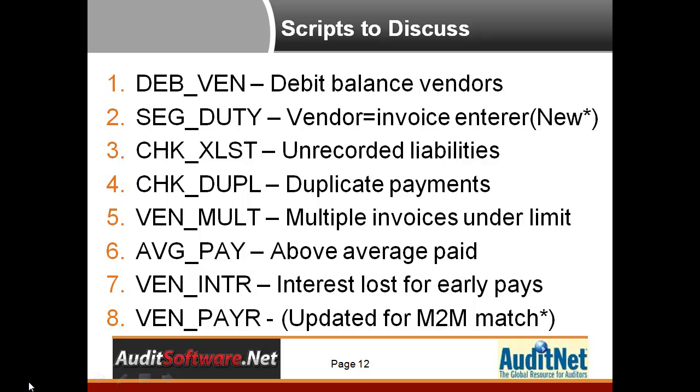Segregation of duty testing — I added this one; it's not in the original work from ten years ago. It looks for where the vendor create user equals the invoice create user, meaning the same person created both. That's a major segregation of duty issue, and we're going to look at that from both a join perspective — joining the files — and then an extract statement. The check XLST script looks for unrecorded liabilities at year end or quarter end, using the age function and the extract command.